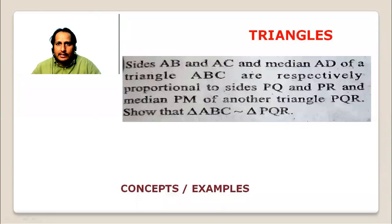Sides AB and AC and median AD of a triangle ABC are respectively proportional to sides PQ and PR and median PM of another triangle PQR. Show that triangle ABC is similar to triangle PQR. This is very easy, it's not tough.